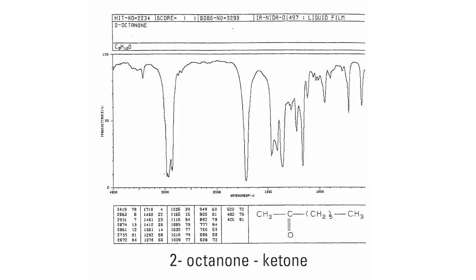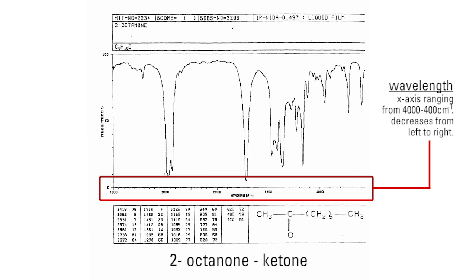Upon inspection, it is important to note that an IR spectrum is a graph of percent transmittance versus wavelength. In this respect, the y-axis ranges from 0 to 100 percent, and the x-axis ranges from 4,000 to 400 centimeters to the minus 1. Note that the x-axis decreases from left to right.